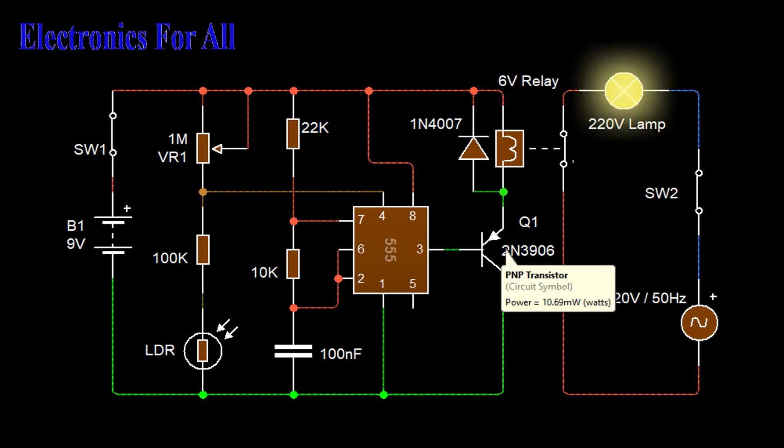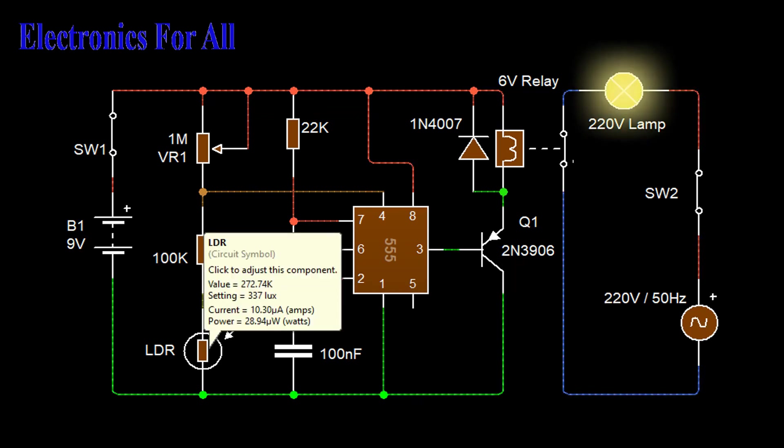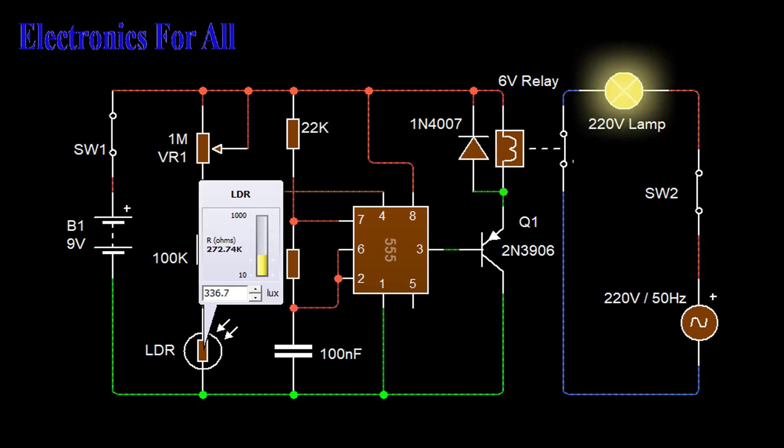Once this reset mode is lifted, the timer generates square wave output. So it is concluded that once the darkness falls on the LDR, the square wave output is generated by the timer. The square wave generated by the timer is fed to the PNP transistor to drive the relay.